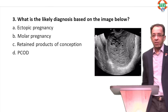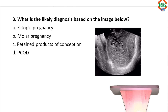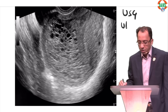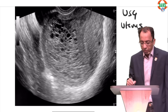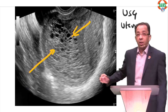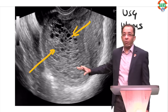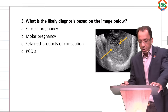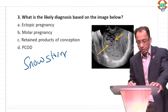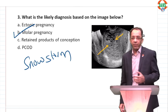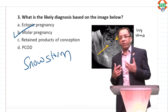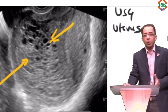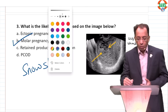Next short question: looking at an ultrasound image of the uterus, you can see white-black areas in the uterine cavity — this is called the snow storm appearance. If you see the snow storm appearance, suspect molar pregnancy. In a partial mole you will see fetal parts; if there are no fetal parts, it is a complete mole, as seen in this image. The answer is molar pregnancy.